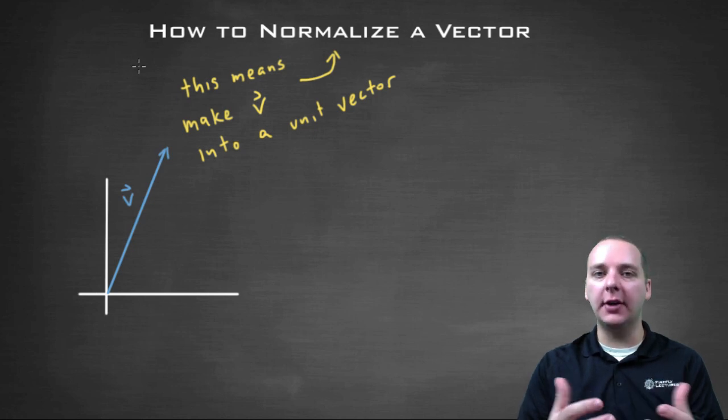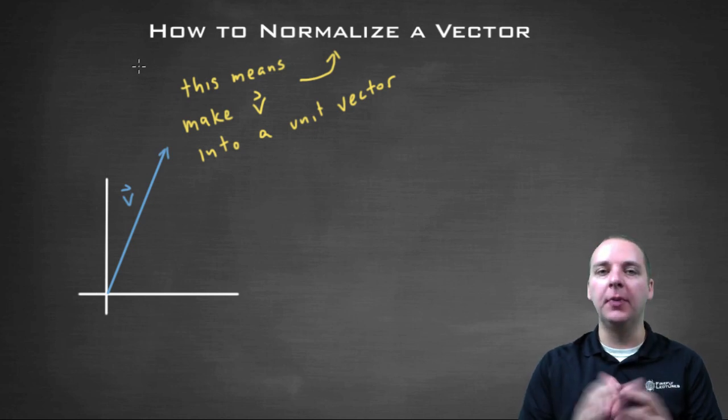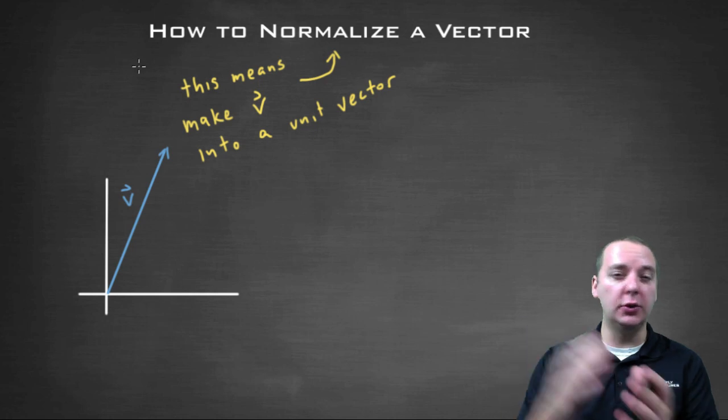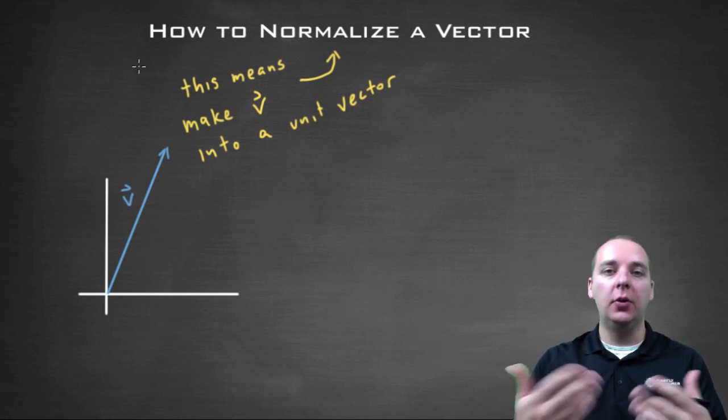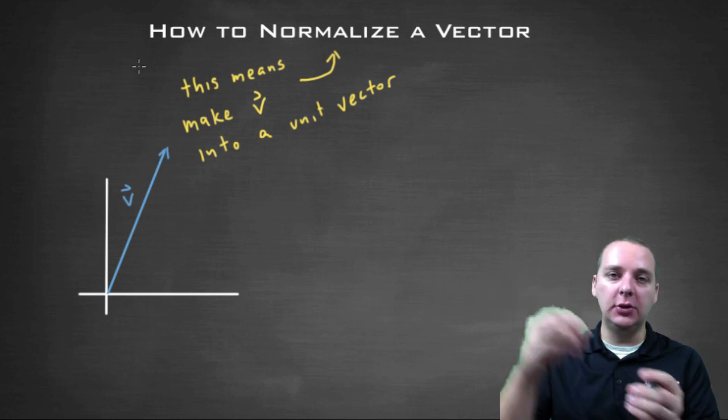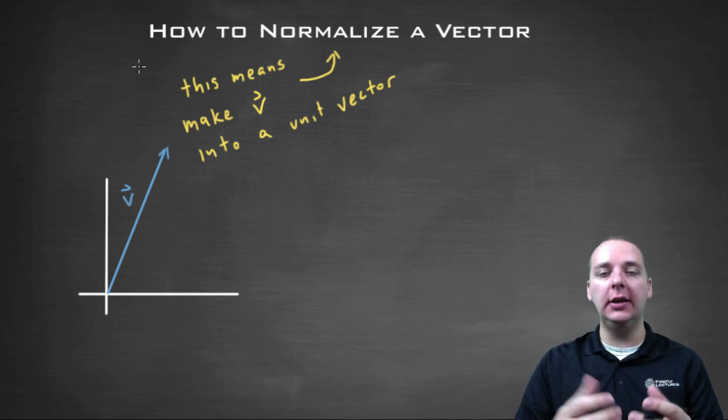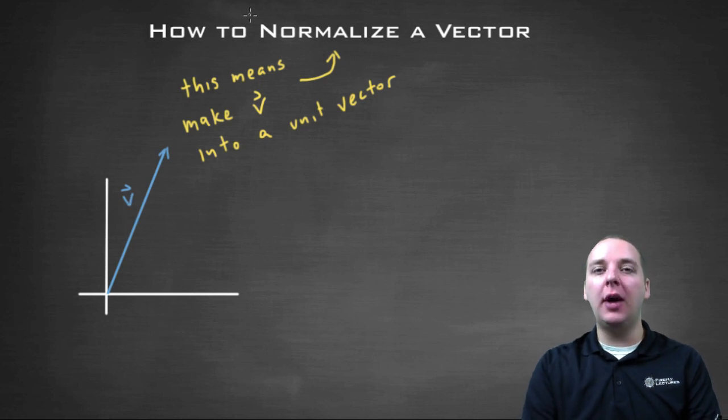Sometimes it'll be necessary to take a vector that's not a unit vector, meaning that it's longer than length one or shorter than length one, and write it as a unit vector, which means scale it either to be shorter or longer than it currently is to where it only has length one.